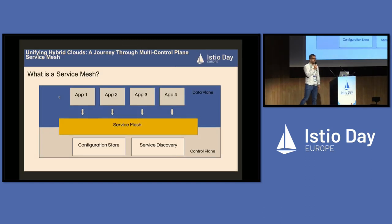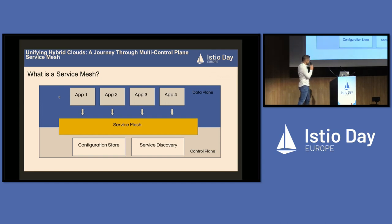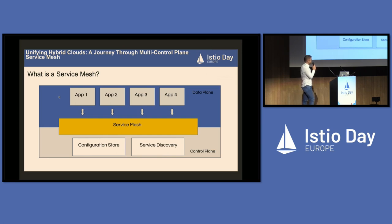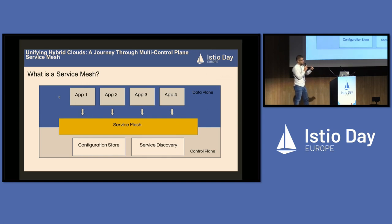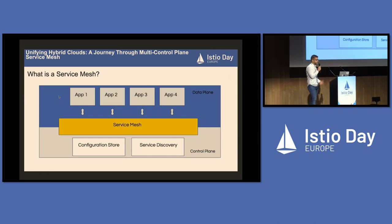Just to put everybody on the same page with the terms I'll be using, a little bit about service mesh. Service mesh is a thin layer with the primary objective of enabling easy service-to-service communication. We have the data plane where this service-to-service communication happens, and the control plane which configures the data plane. The control plane uses information from a service discovery database and configuration storage.